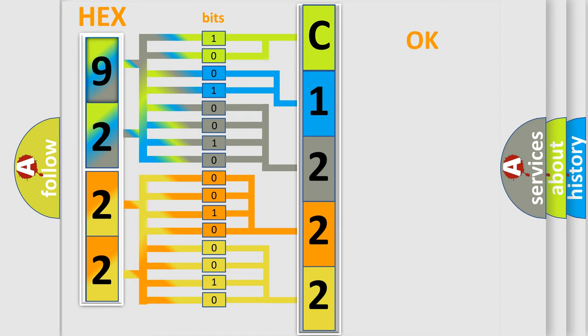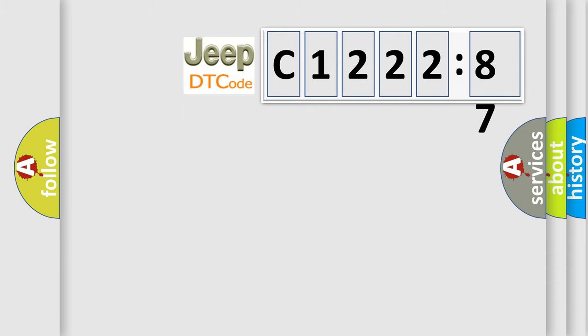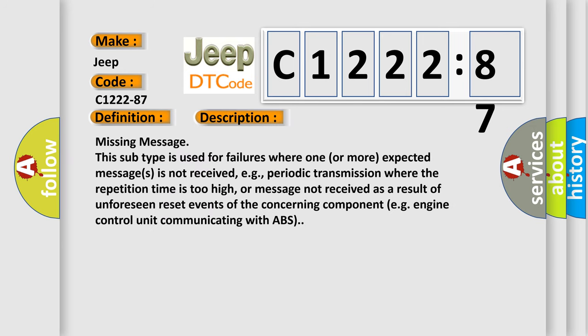We now know in what way the diagnostic tool translates the received information into a more comprehensible format. The number itself does not make sense to us if we cannot assign information about what it actually expresses. So, what does the diagnostic trouble code C1222-87 interpret specifically for Jeep car manufacturers? The basic definition is: engine 5 message — missing message.